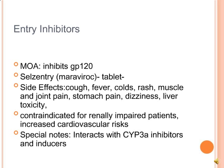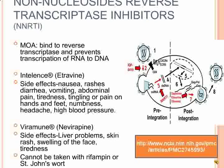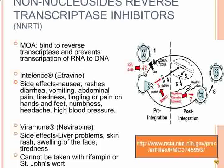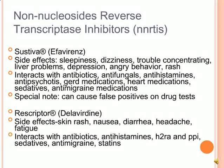Non-nucleoside reverse transcriptase inhibitors, or NNRTIs, bind to reverse transcriptase and prevent transcription of RNA to DNA. Some drugs include efavirenz and delavirdine. Side effects include nausea, rashes, diarrhea, vomiting, abdominal pain, tiredness, tingling pain in the hands and feet, and numbness. Efavirenz side effects also include sleepiness, dizziness, trouble concentrating, liver problems, depression, angry behavior, and rash. It can interact with antibiotics, antifungals, antihistamines, antipsychotics, GERD medication, heart medication, sedatives, and anti-migraine medications, and can cause false positives on drug tests. Delavirdine can cause skin rash, nausea, diarrhea, headache, and fatigue, and can interact with the same types of drugs.